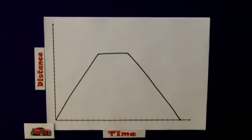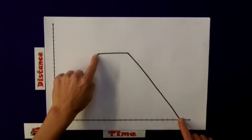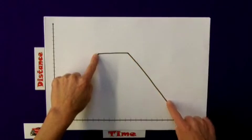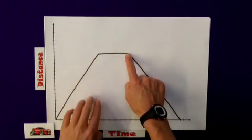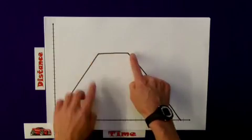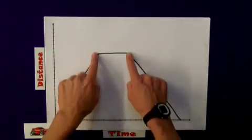What the graph is showing is the car traveling to the shops and back. This part is where he is at the shop - the car is not traveling any distance, but time is still passing for a period.